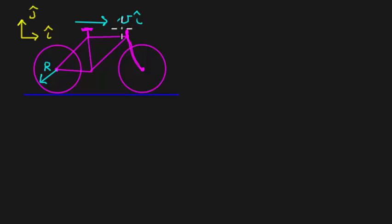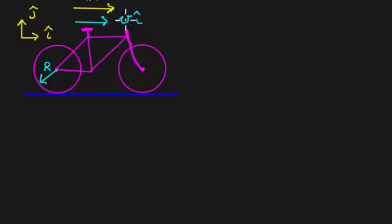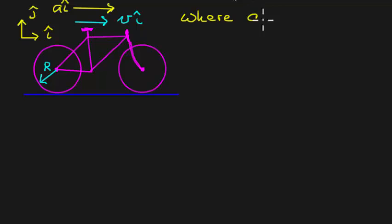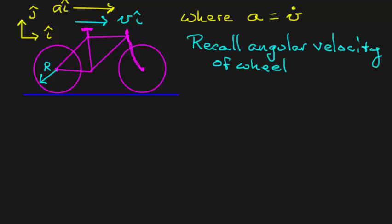The velocity of the bike is v in the i-hat direction, but now that velocity is not constant. So we also have an acceleration a in the i-hat direction, where a is just the time derivative of v, by definition.